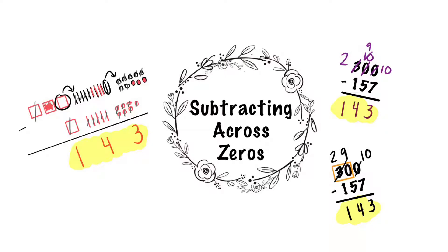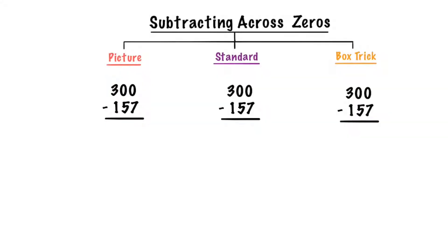Welcome back Math Grizz! Today we will be subtracting across zeros. 300 take away 157.